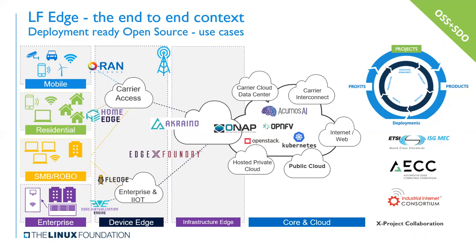LF Edge has end-to-end context — it's deployment-ready open source, including use cases of enterprise across the device edge, the home edge, EVE, through the infrastructure edge, all the way to the cloud and core. We work together with different organizations like Kubernetes, CNCF, ONAP, and others. We are doing a closed loop from projects to deployment.